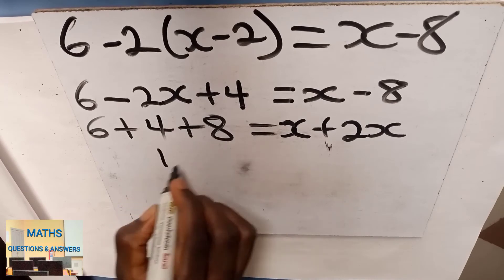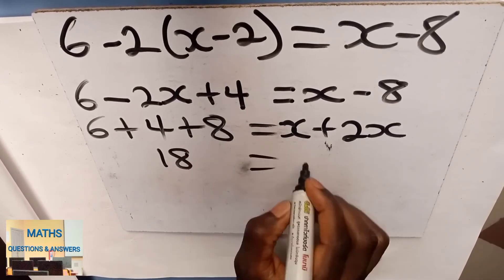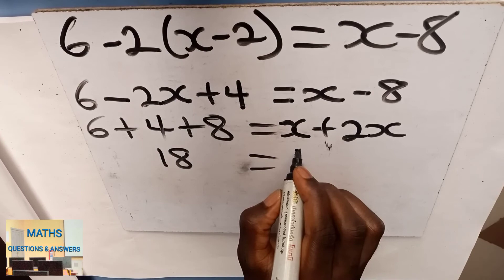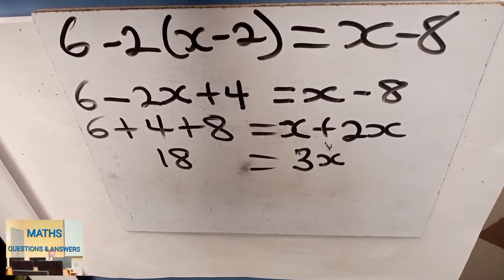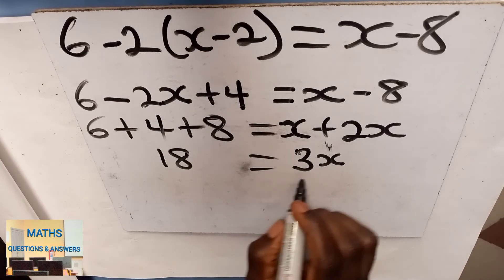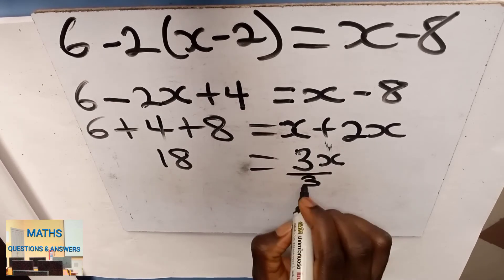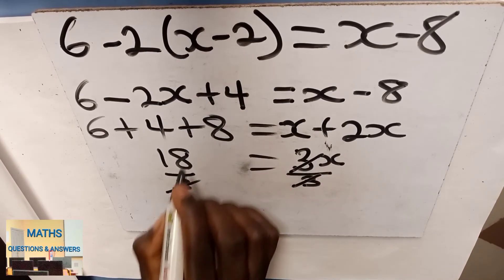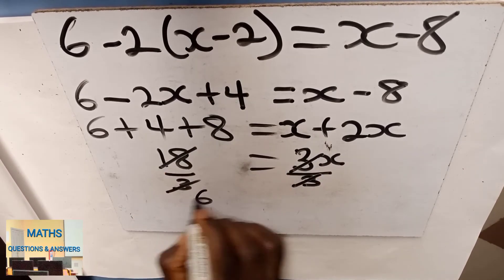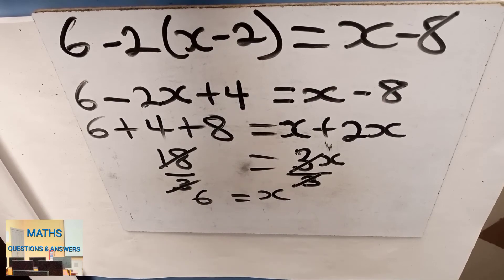6 plus 4 plus 8 gives 18 equal to x plus 2x gives 3x. But I don't want 3x, I want x. So we divide both sides by the coefficient of x, which is 3. So 18 divided by 3 gives you 6, and that is equal to x.